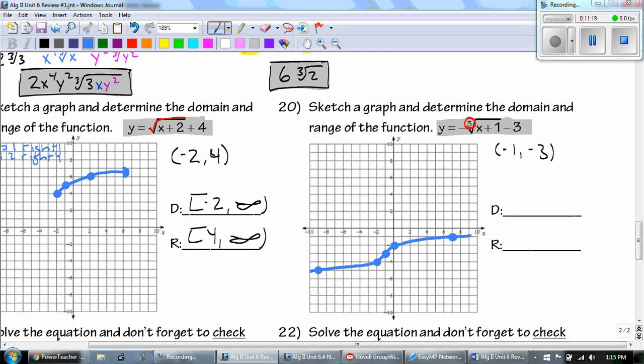My domain is from negative infinity to positive infinity. And my range is from negative infinity to positive infinity. So, the key thing for this is knowing the pattern. Once again, the pattern. Up 1, right 1, up 2, right 8. And then I go down 1, left 1, down 2, left 8.